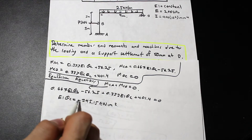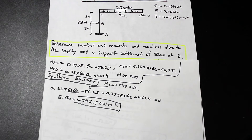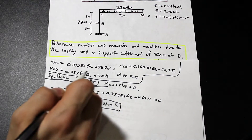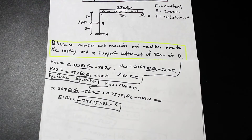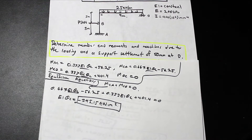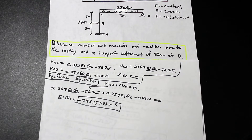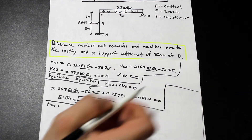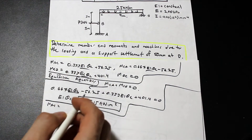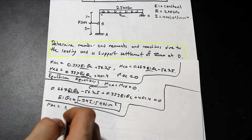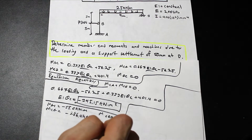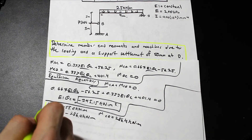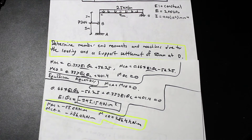We now plug EI·θ_C equals negative 345.15 back into all four slope deflection equations to solve for the member end moments MAC, MCA, MCD, and MDC. Go ahead and pause the video and try to get the same answers — it's good practice.